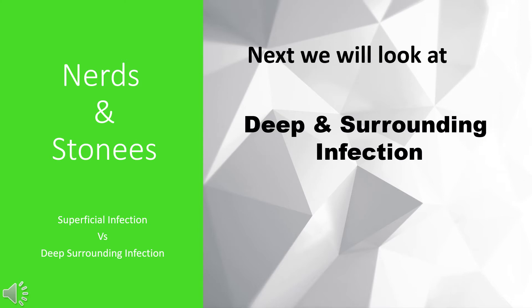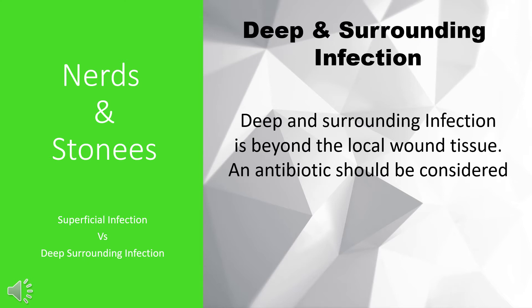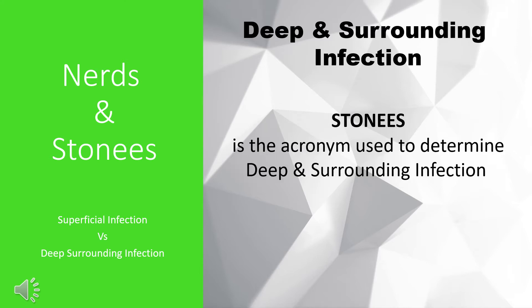Next we will look at deep and surrounding infection. Deep and surrounding infection is an infection beyond the local wound tissue, and antibiotics should be considered. STONIES is the acronym used to determine deep and surrounding infection.